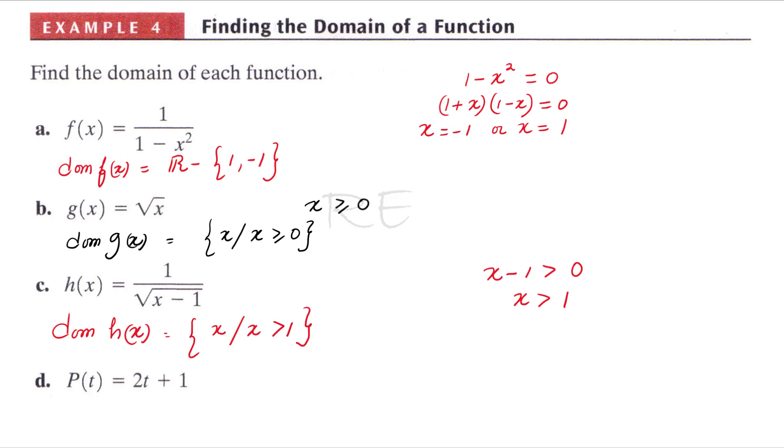p(t) equals 2t plus 1 is a polynomial function. This is the equation of a line, and polynomial functions are everywhere defined. So the domain is all real numbers.